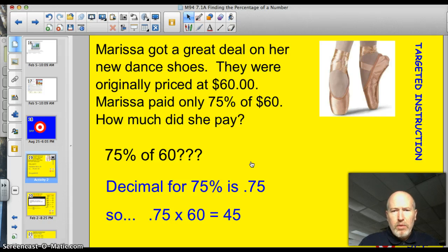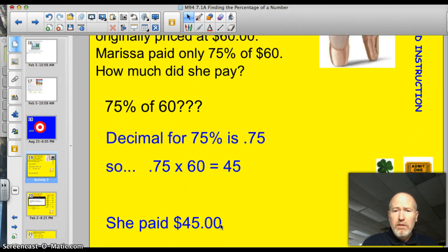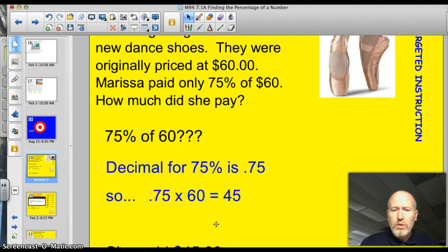Here's a real-life example of what we're going to do tonight. Marissa got a great deal on her new dance shoes. Originally priced at $60, Marissa paid only 75% of the $60. How much did she pay? Here's my question. 75% of $60 is how much? Well, the decimal for 75% is .75. So, if I take .75 times the $60, I get $45.